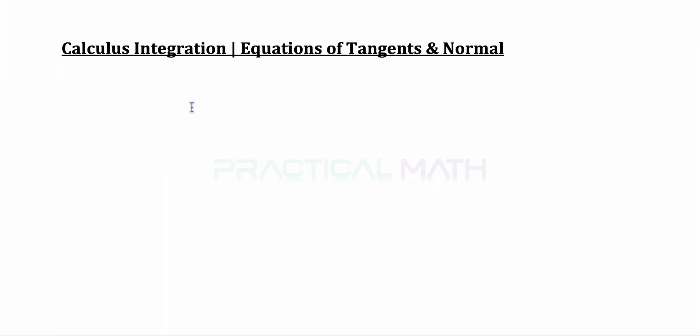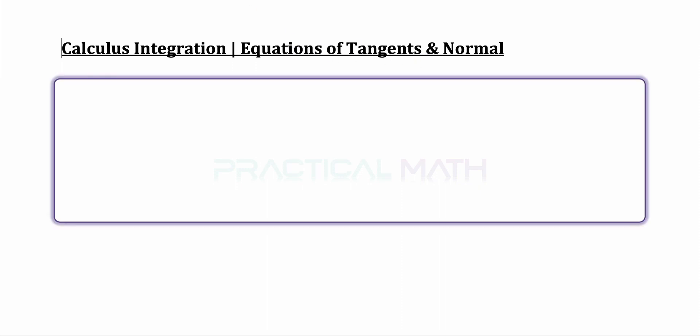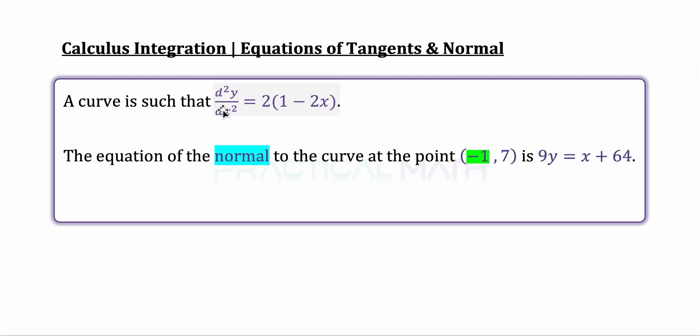Hi, in this video, we'll be discussing calculus integration and equations of tangents and normal. The question goes, a curve is such that d²y/dx² is given to be 2(1 - 2x). You are also given that the equation of normal to the curve at this point (-1, 7) is given to be 9y = x + 64.